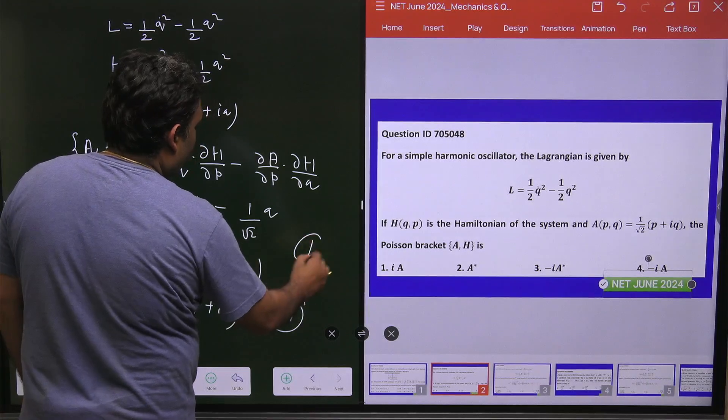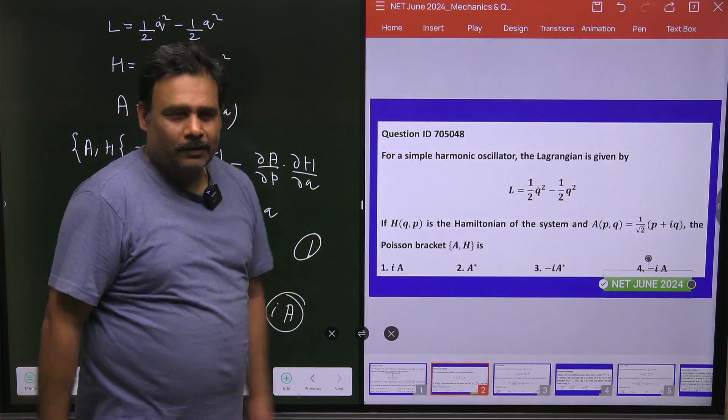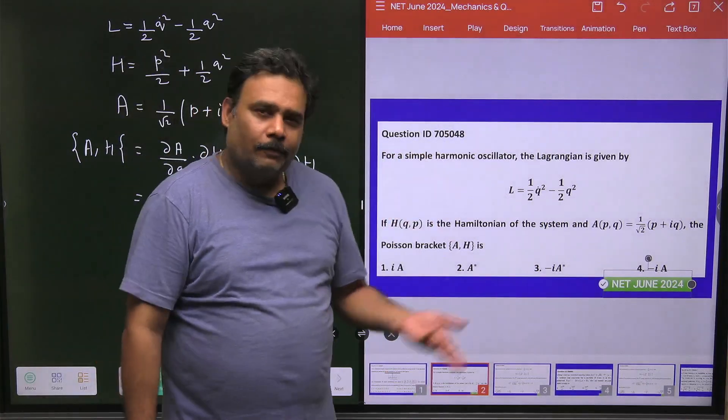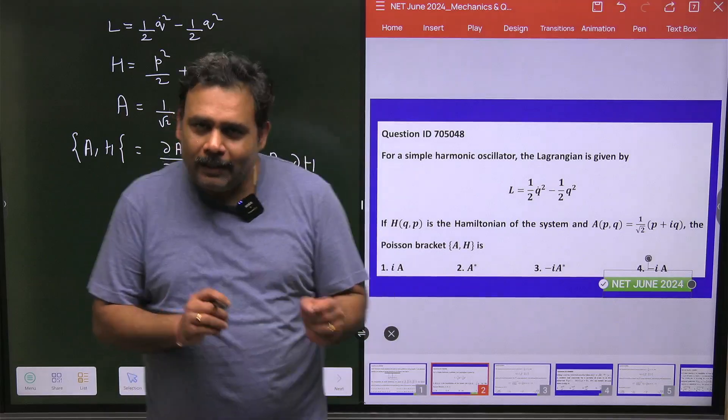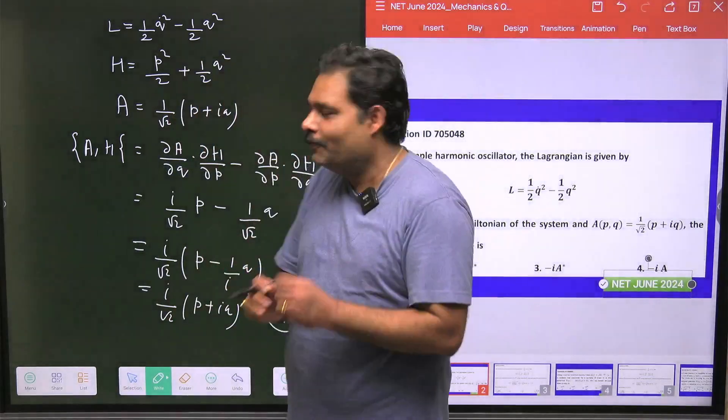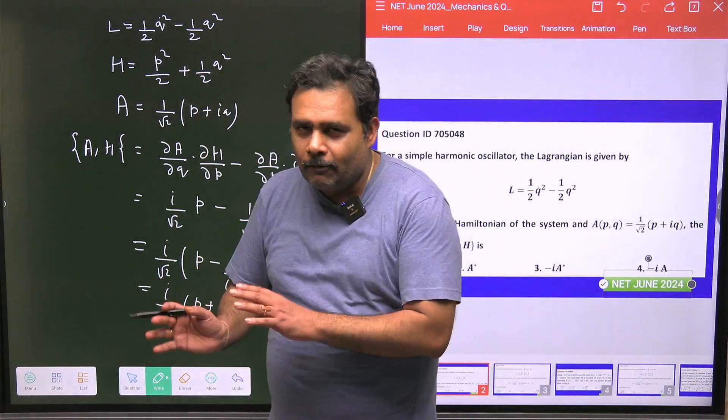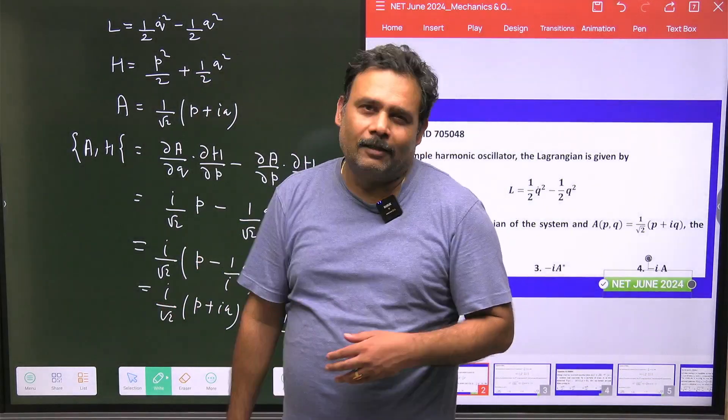Option number 1 is the correct one. This is a straightforward question and we have solved lots of questions like this. But you have to be a little bit careful about how you are putting i and taking it common, then the minus sign is coming.